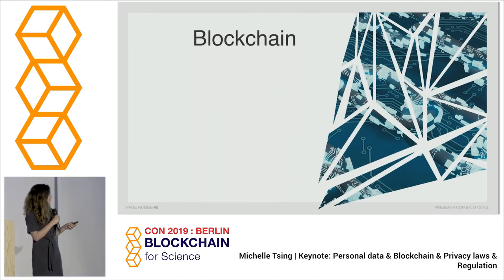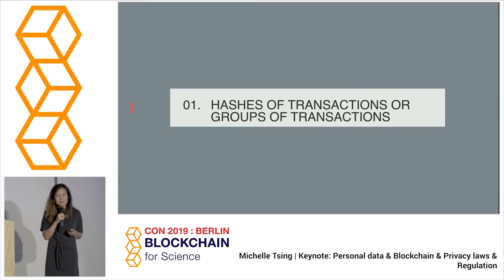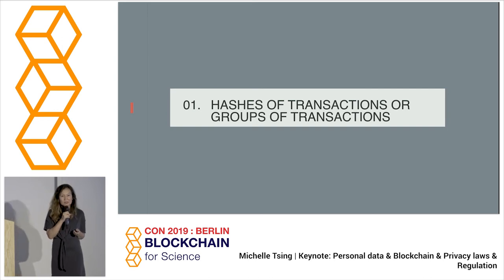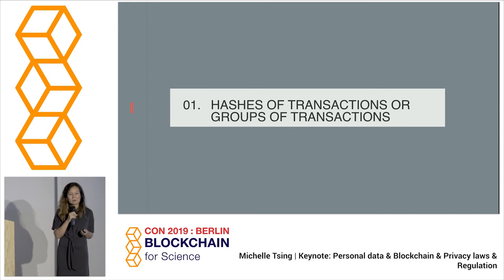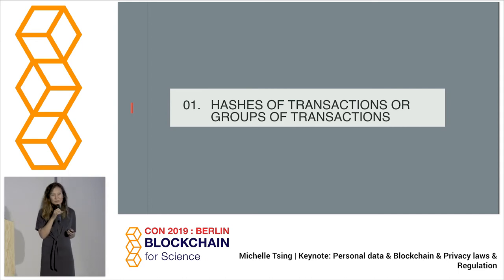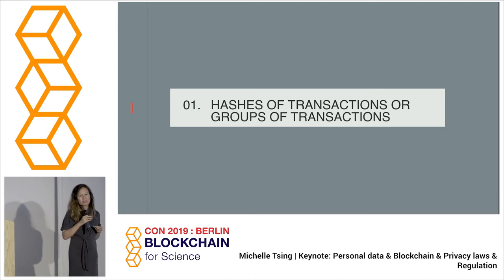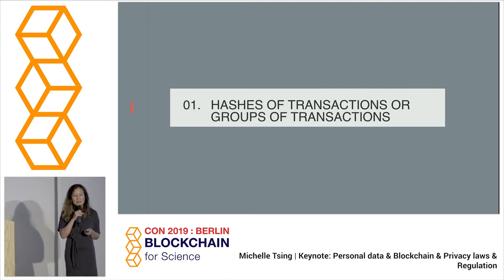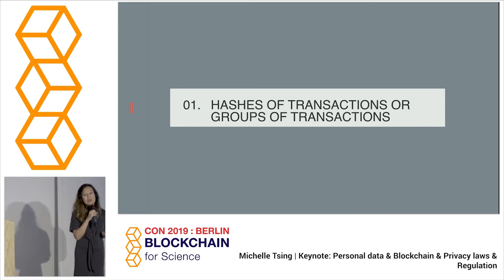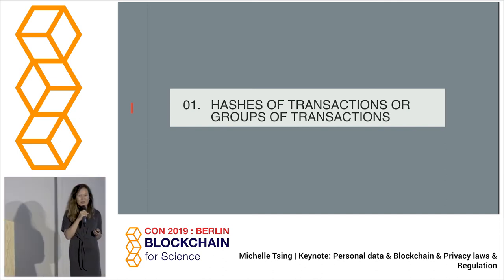Now let's talk about blockchain. Blockchain has certain characteristics — it has hashes of transactions or groups of transactions, protected by cryptography, and is supposed to be very secure. But really think about the systems around it. Why are exchanges on the blockchain always hacked? When we think about blockchain, we think about the public ledger, but we forget that around the ecosystem there are other things like exchanges that keep all the money. Are they protected? Are they secure? How are they keeping and protecting our data? Are they compliant with KYC and AML regulations and laws?